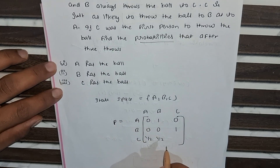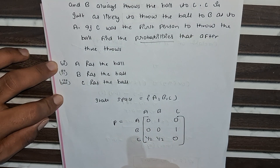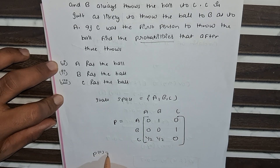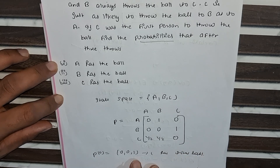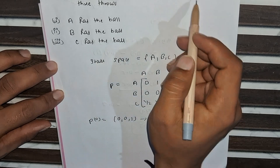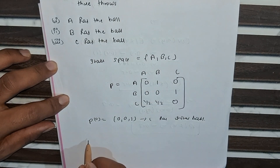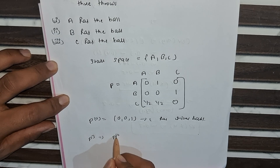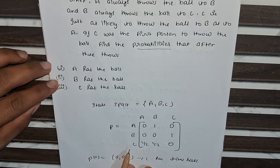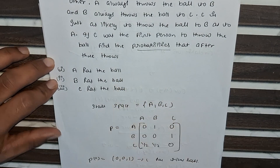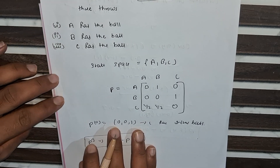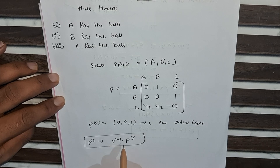Since initially C has the ball, the initial probability vector is p₀ = (0, 0, 1). We have to find the probabilities after three throws, which means we need to find p(3), which equals p₀ multiplied by P³. So p(3) = p₀ · P³ gives us the probability of A, B, and C holding the ball after three throws.